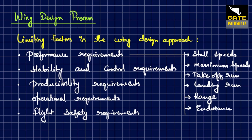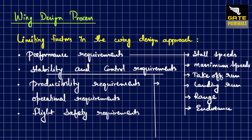Performance requirements also cover the endurance of the aircraft. Primary stability and control requirements include lateral-directional static stability, longitudinal stability, aircraft controllability, and maneuverability of the aircraft.